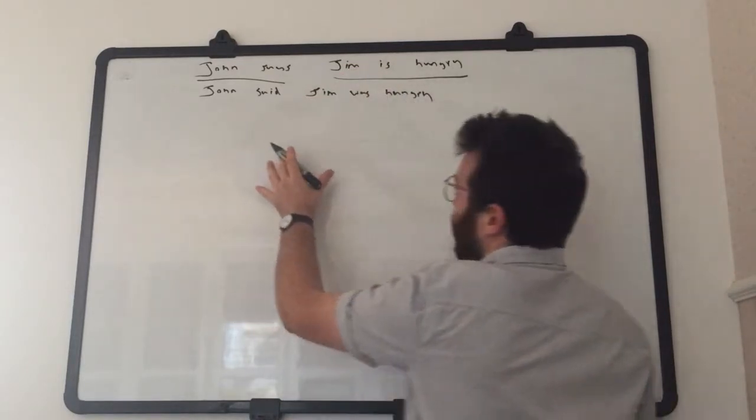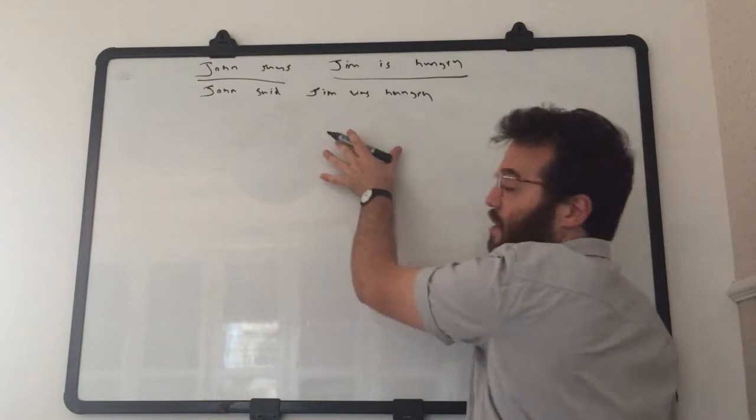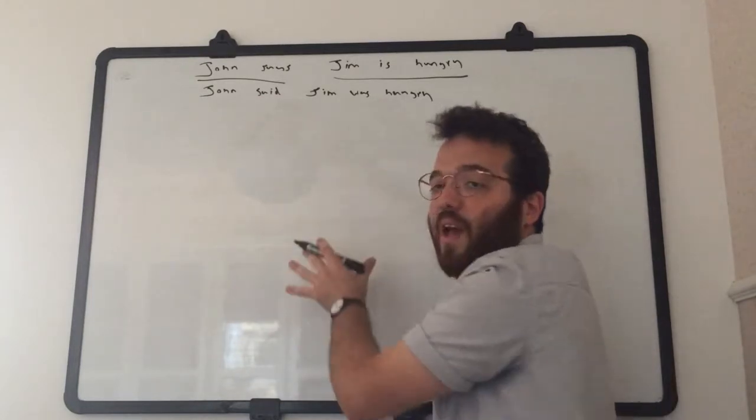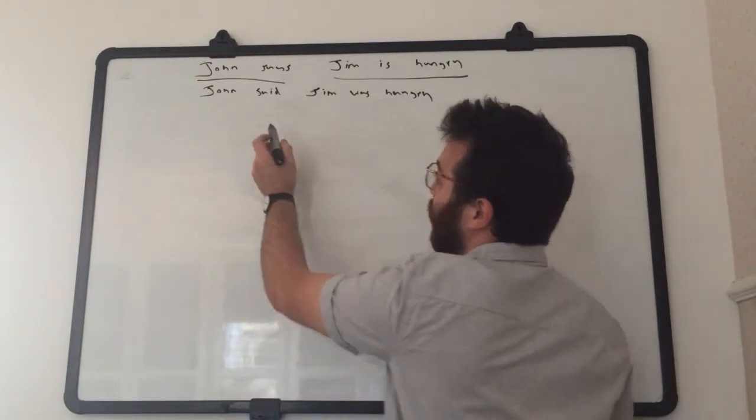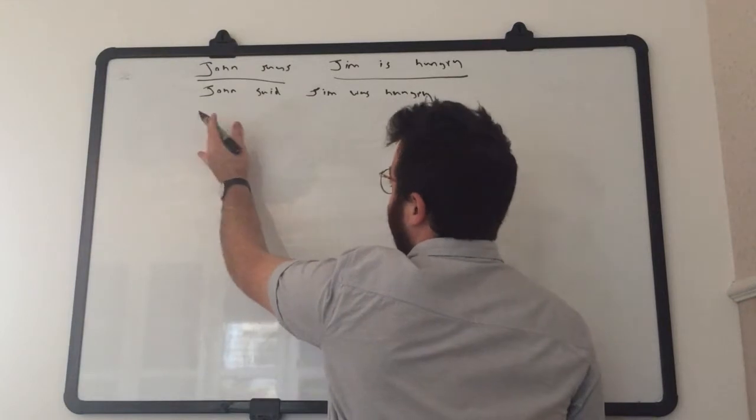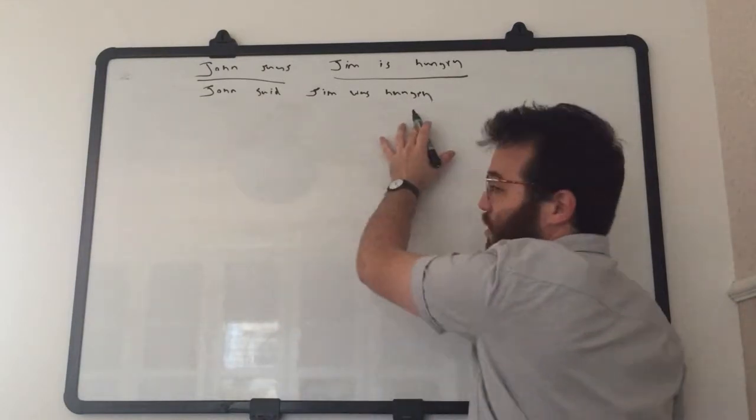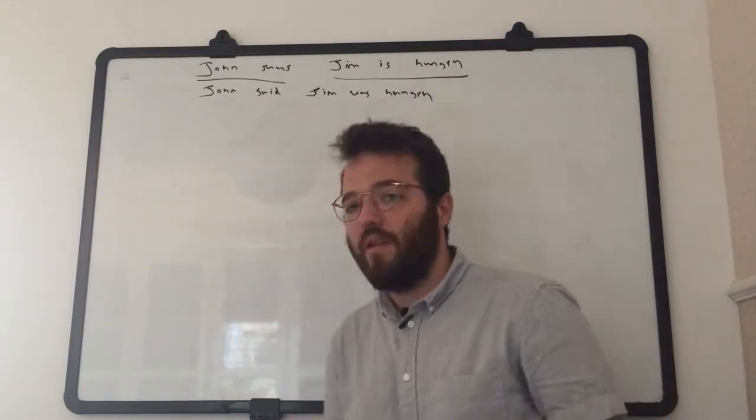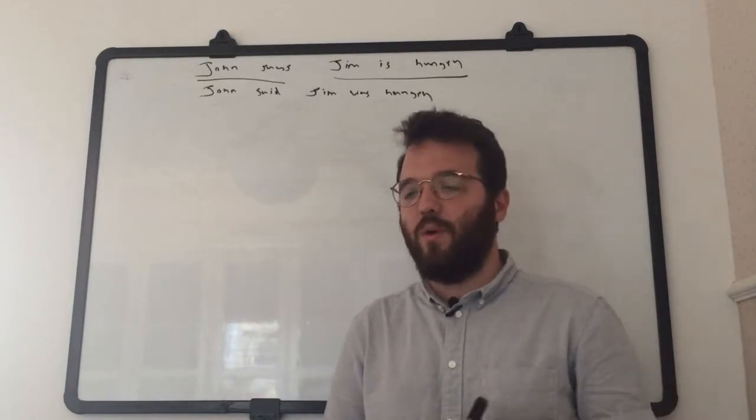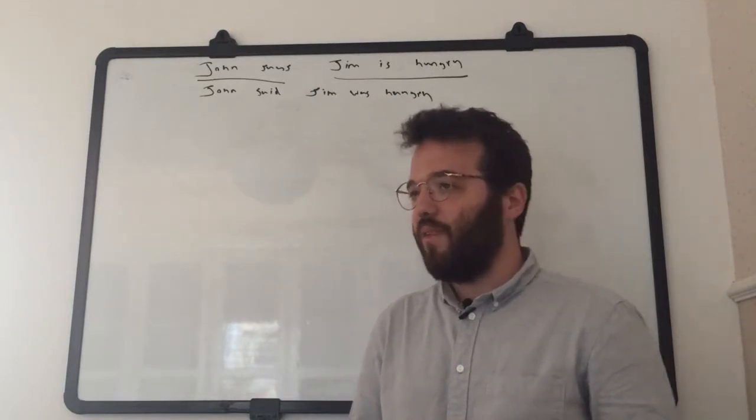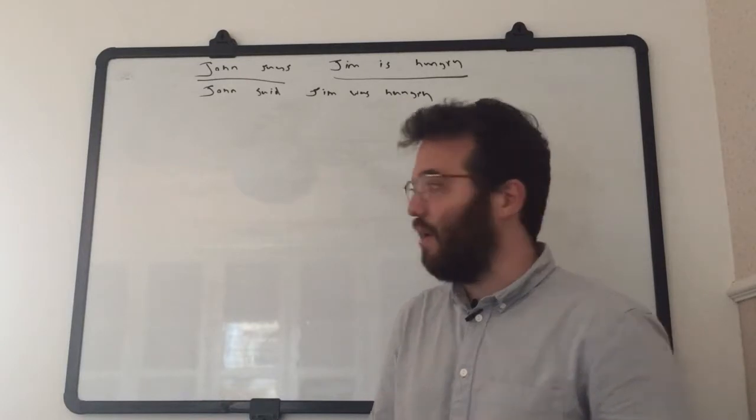So here again, we have main clause, independent clause, and both happen at the same time. While John said whatever, he said Jim was hungry. But things get a bit more confusing when we have different tenses, different times for the two clauses.